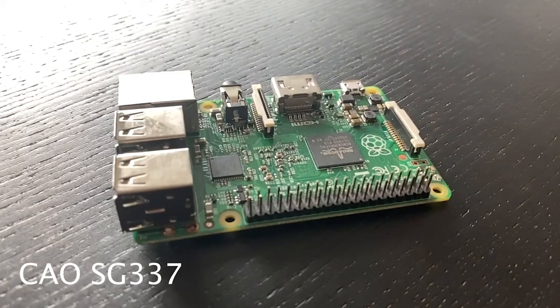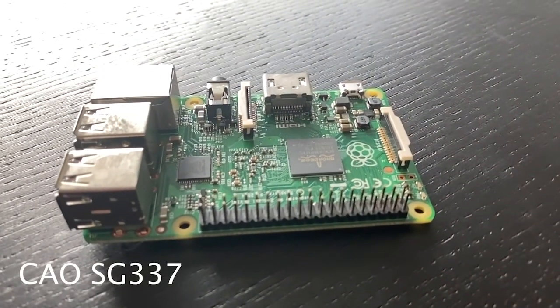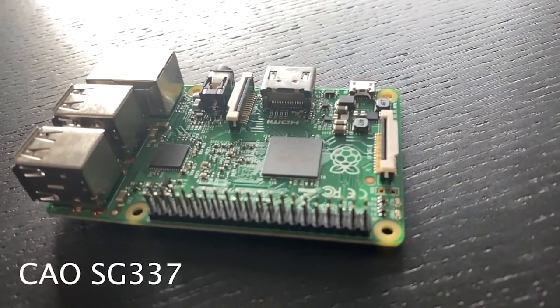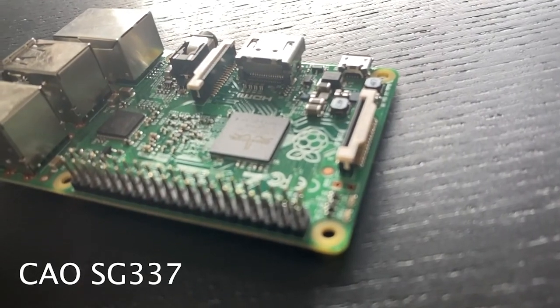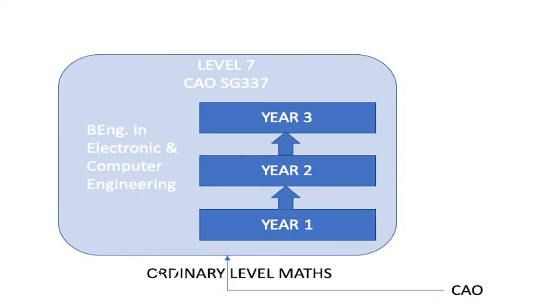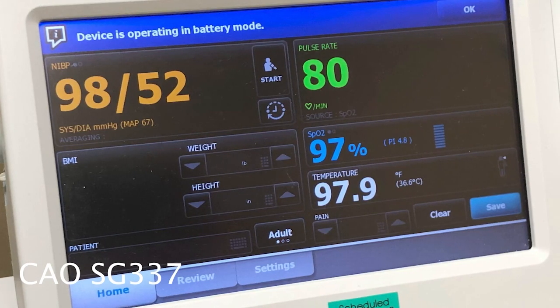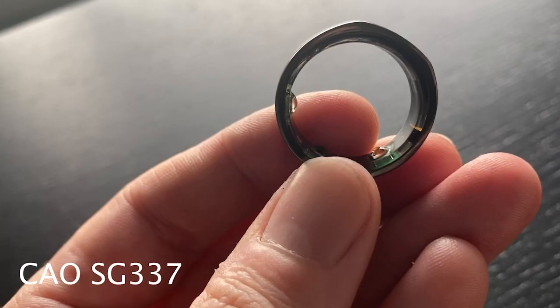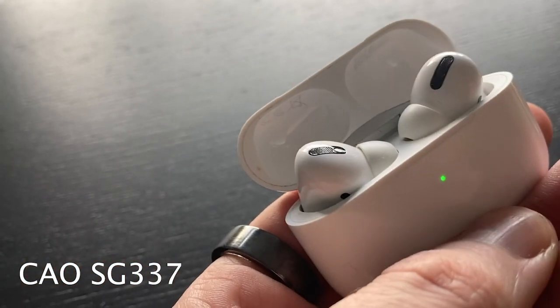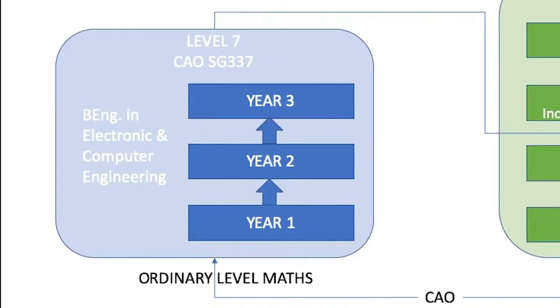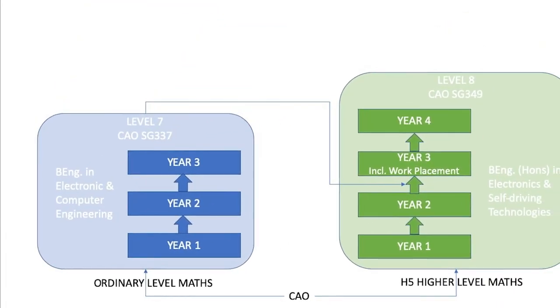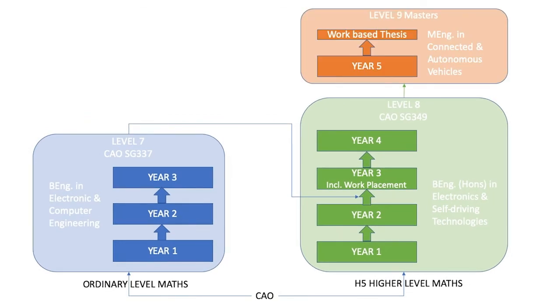If you are interested in technology or engineering but are not doing higher-level maths, why not consider our Level 7 in Electronic and Computer Engineering? This is a three-year program that looks at the design and development of embedded electronic systems. These are the medical devices that keeps us healthy, the consumer devices that keeps us entertained, or the controlled systems that keeps us safe on the road. You can then progress on to the Level 8 in Electronics and Self-Driving Technologies, and from there to the Masters. Check out the link below for more information.